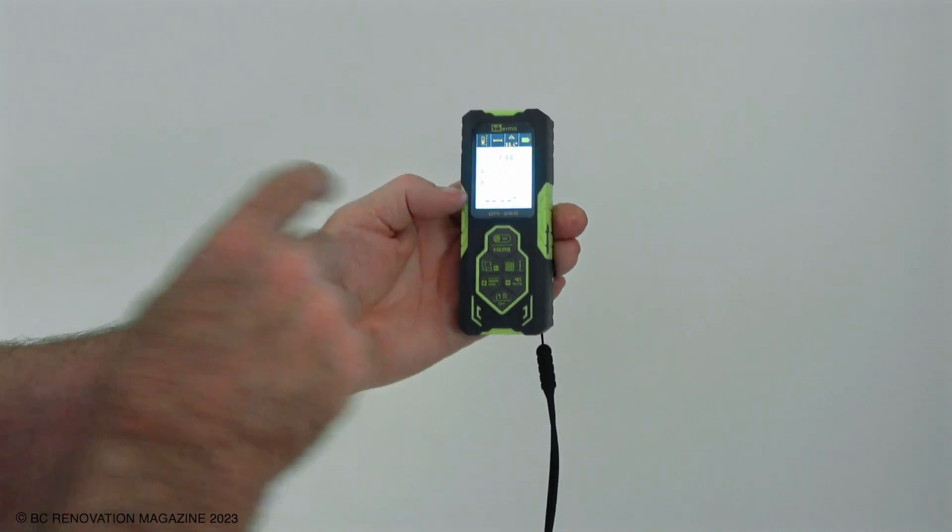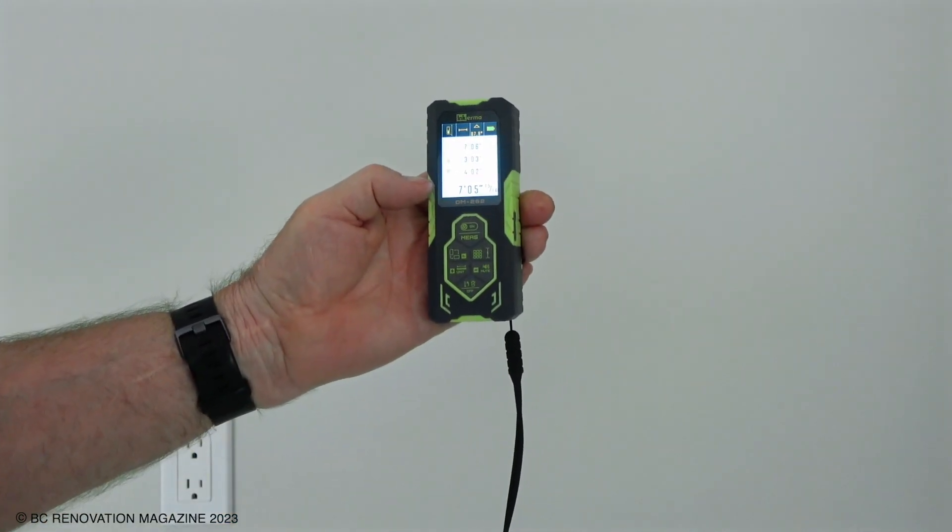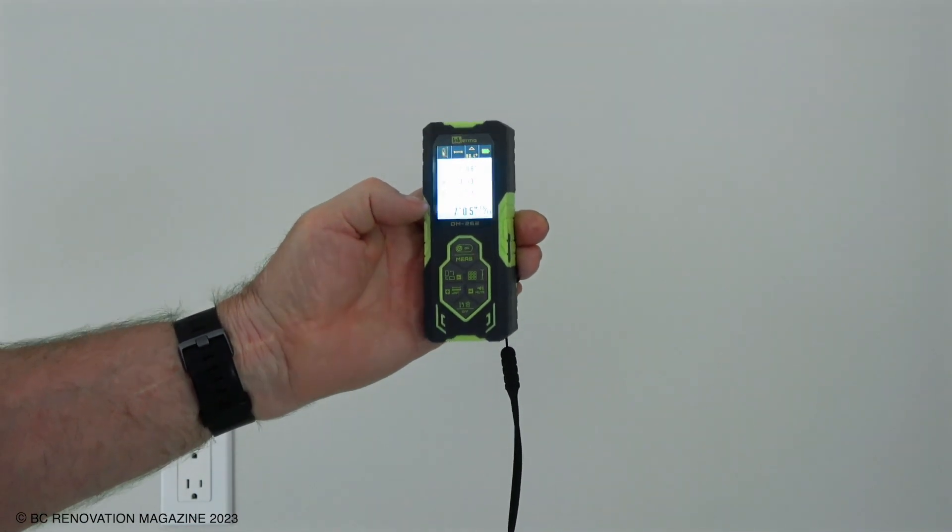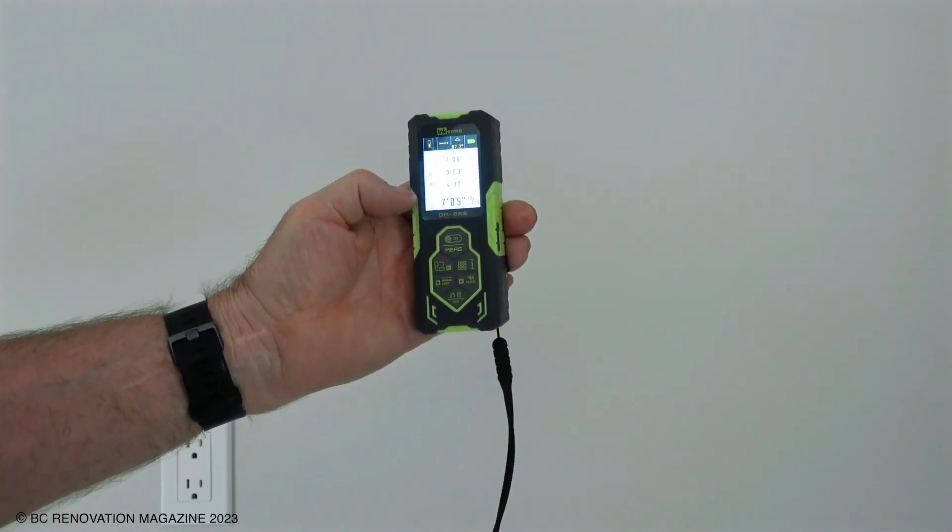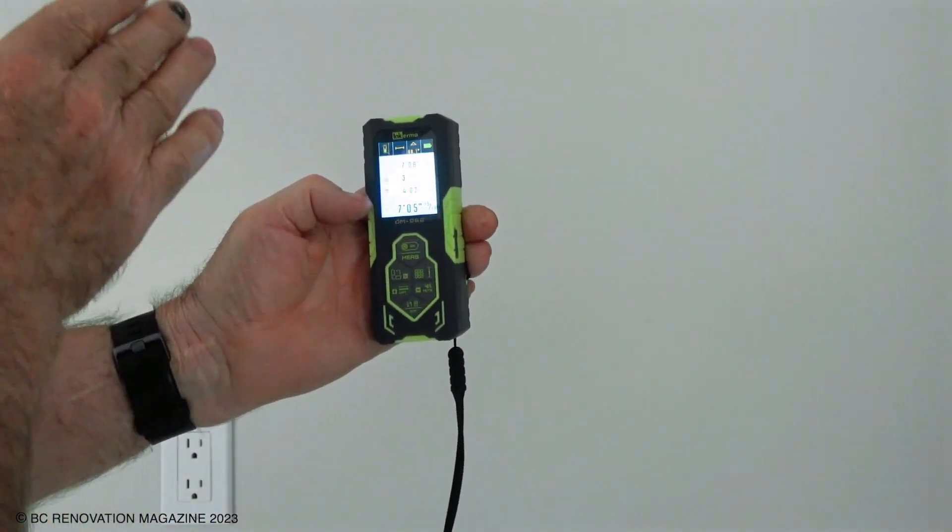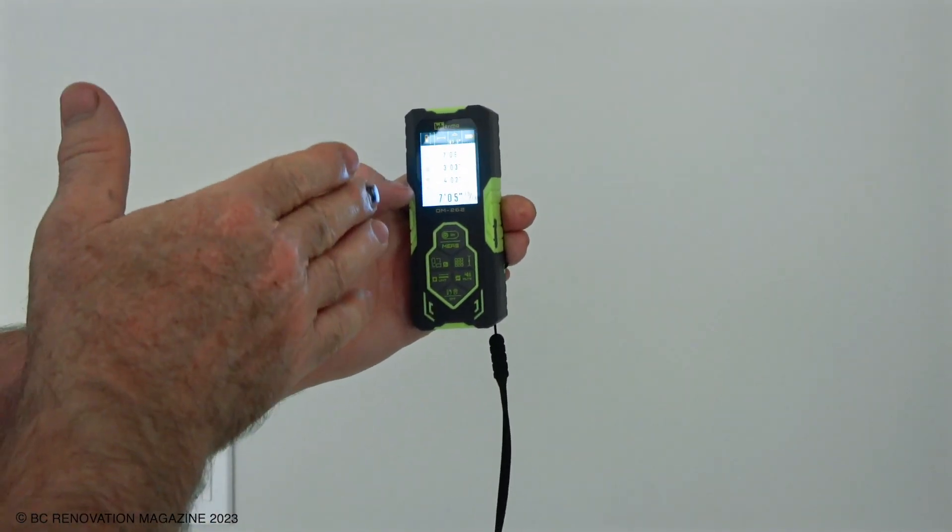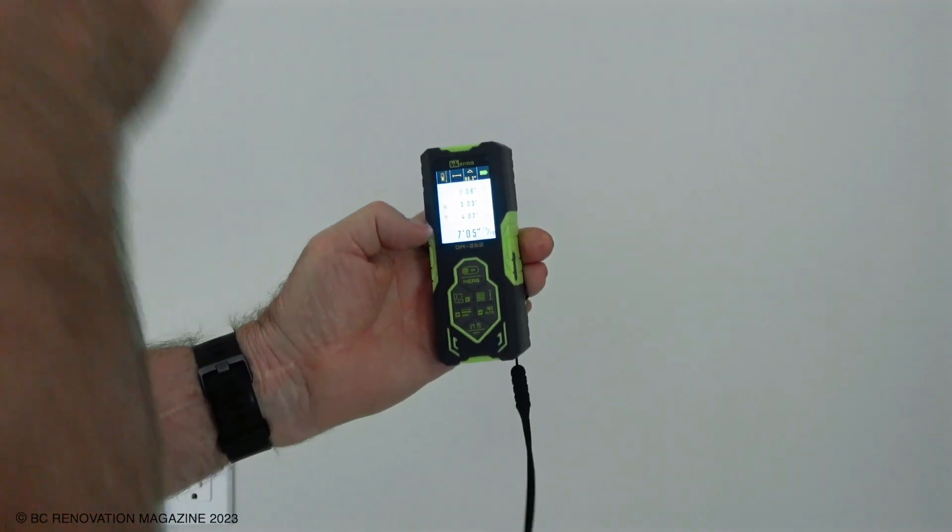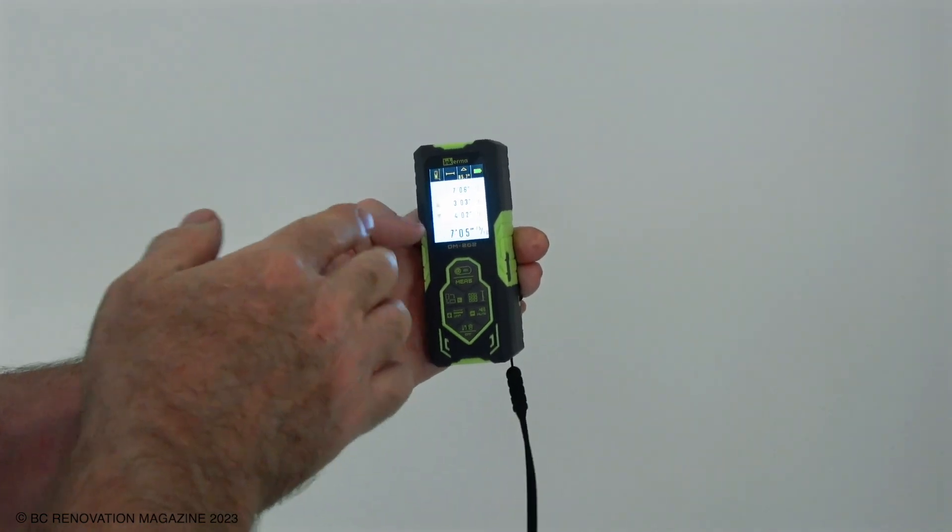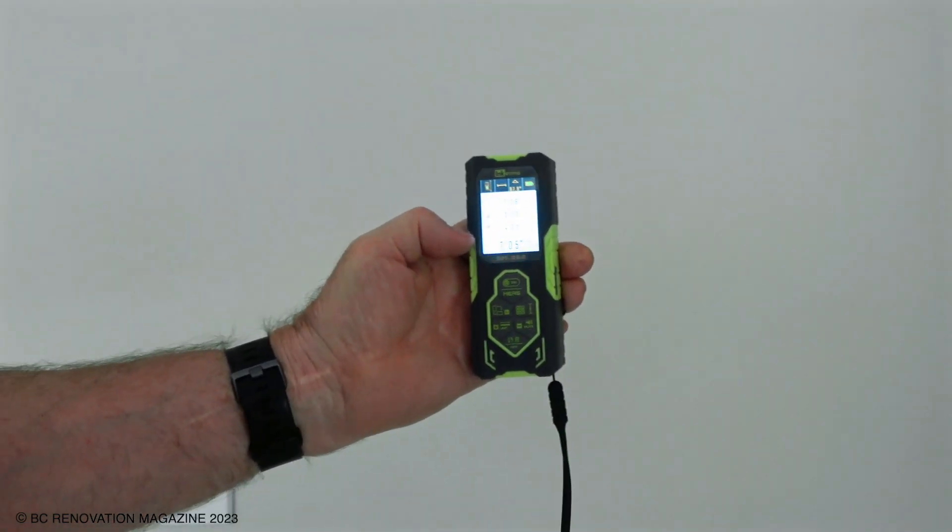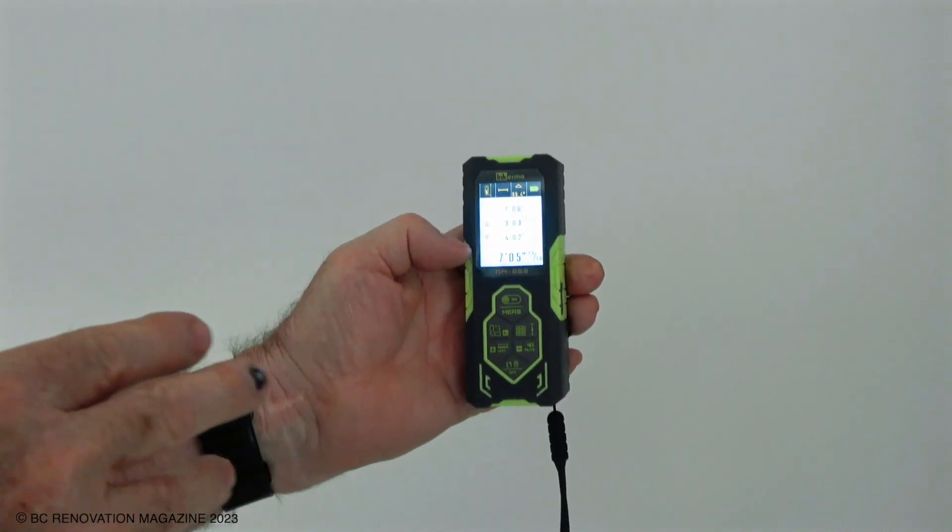Okay, hit it again. Seven foot five and five sixteenths. But you see again I'm wobbling here, so we're not really measuring vertically, we're measuring a bit of a hypotenuse of a triangle. And this device is capable of doing that intentionally in one of the settings in the menu.